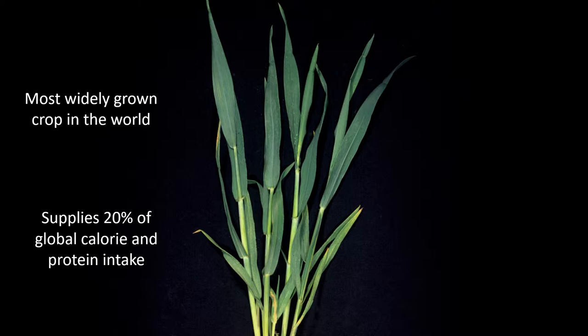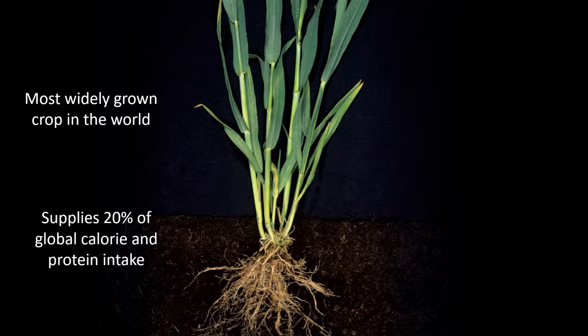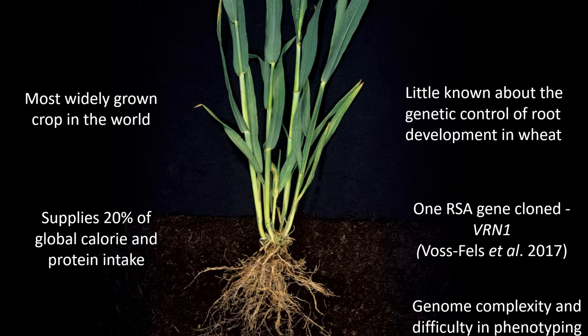This is the wheat plant, and you might not know that wheat has the widest range of cultivation of all the crops cultivated in the world. It's cultivated all the way from Scandinavia down to Argentina. And importantly, it's the crop that supplies 20% of global calorie and protein intake. So wheat is very important.